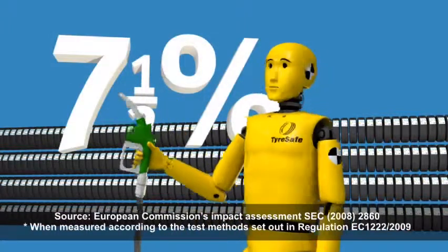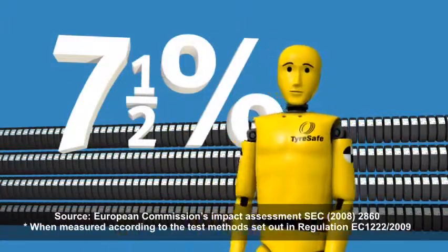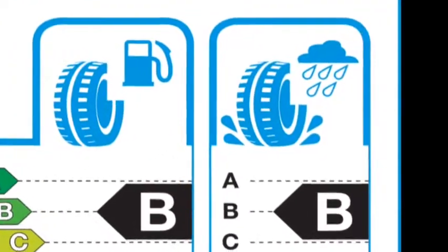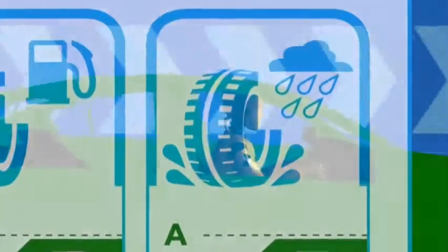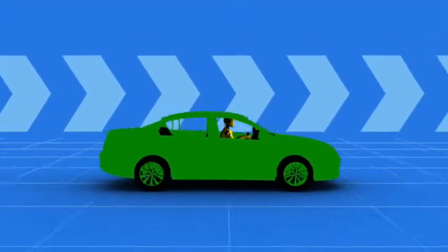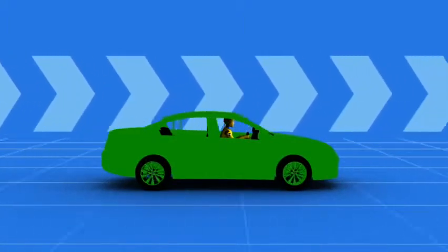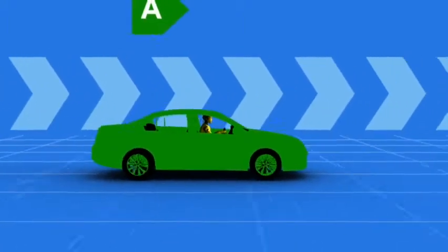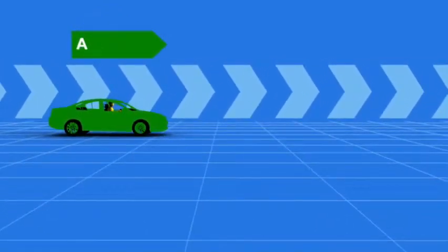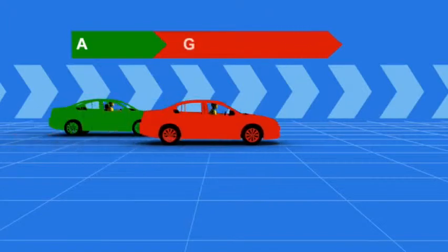Next, wet braking performance. This category is critical to your safety on the road as it affects how quickly you'll be able to stop in wet conditions. Again, there are seven classes. An A-rated tire provides the shortest braking distance on wet roads, whereas a G-rated tire will have the longest braking distance in the wet.